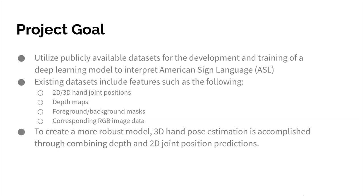The goal of this project is to utilize publicly available datasets for the development and training of a deep learning model to interpret American Sign Language. Existing datasets include features such as 2D and 3D hand joint positions, depth maps, foreground and background masks, as well as the corresponding RGB image data. To create a more robust model and utilize all of these datasets, 3D hand pose estimation is accomplished through combining predicted depth and 2D key point estimations.